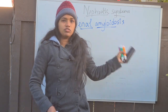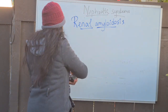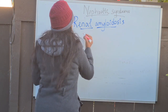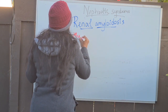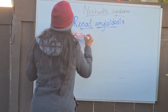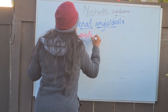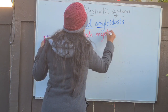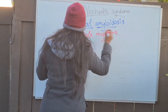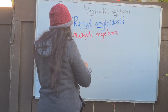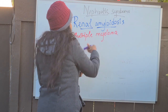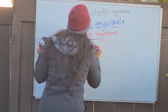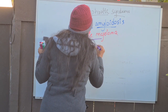Let us see what causes this renal amyloidosis. Renal amyloidosis is most commonly caused by multiple myeloma. Multiple myeloma is nothing but the cancer of plasma cells, and there will be abnormal plasma cell proliferation.